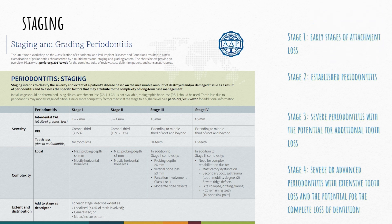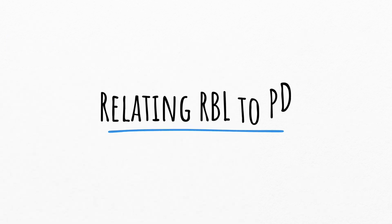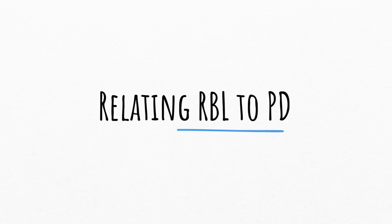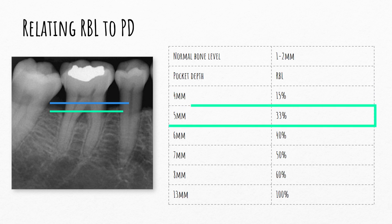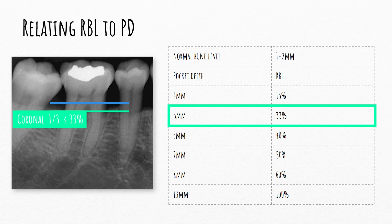What if radiographic bone loss was not calculated? In that case, the probing depth in the chart could give us an estimation of the percentage. If the probing depth was 4 or less, radiographic bone loss will most probably be less than 15%, indicating less than 15% of the root length is exposed — this is stage 1. If it was 5, then it's between 15 and 33%, and this is stage 2, meaning bone loss is still in the coronal third of the root. If 6 or more, then it's more than 33%, indicating bone loss has reached the middle third or beyond — stage 3 or 4.